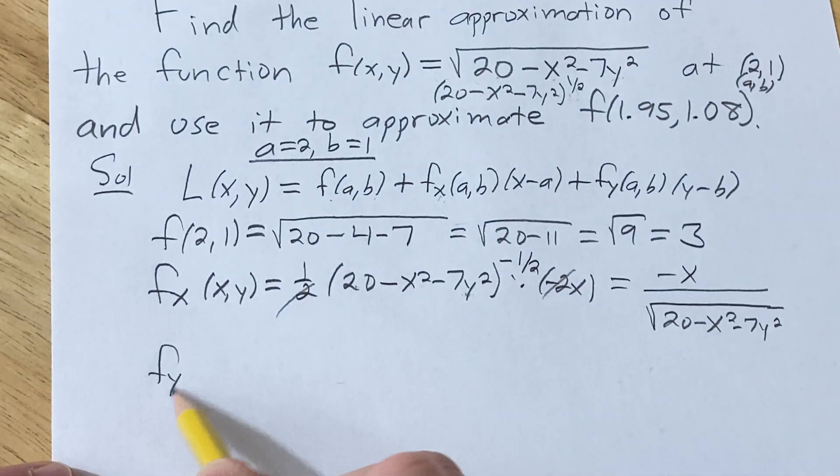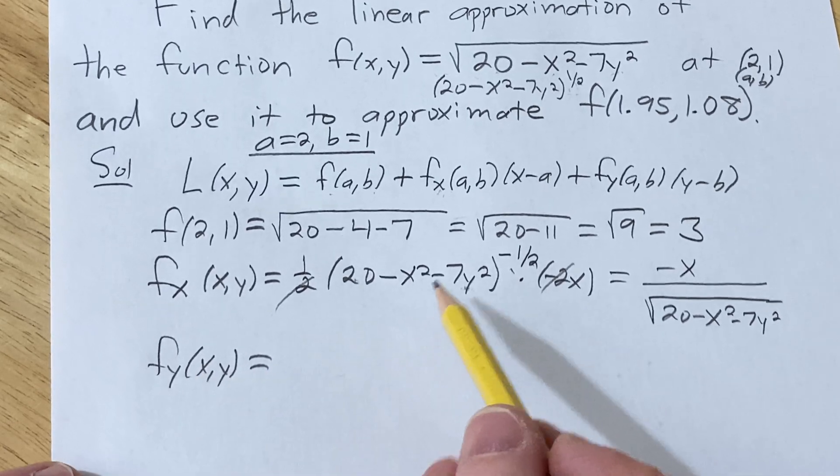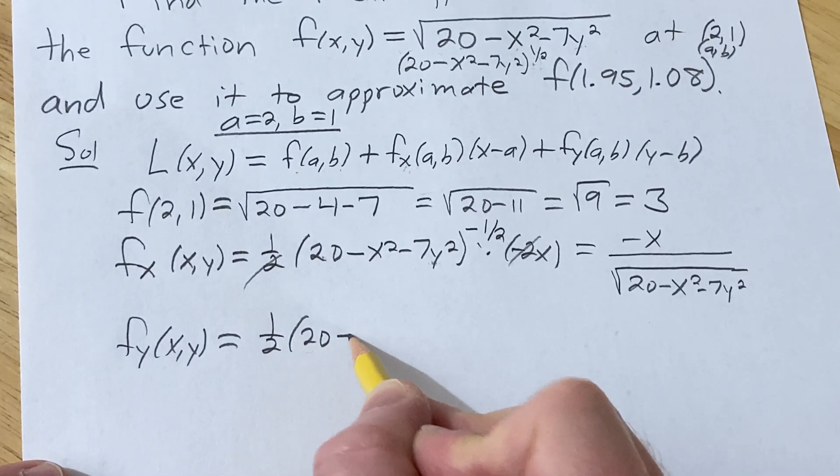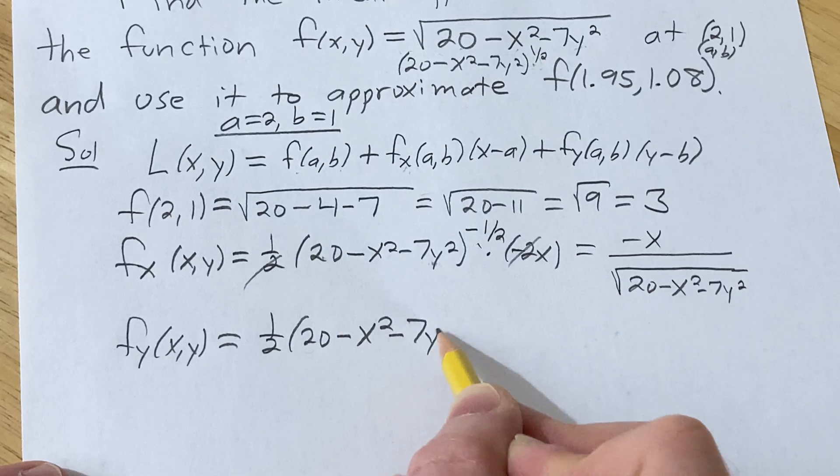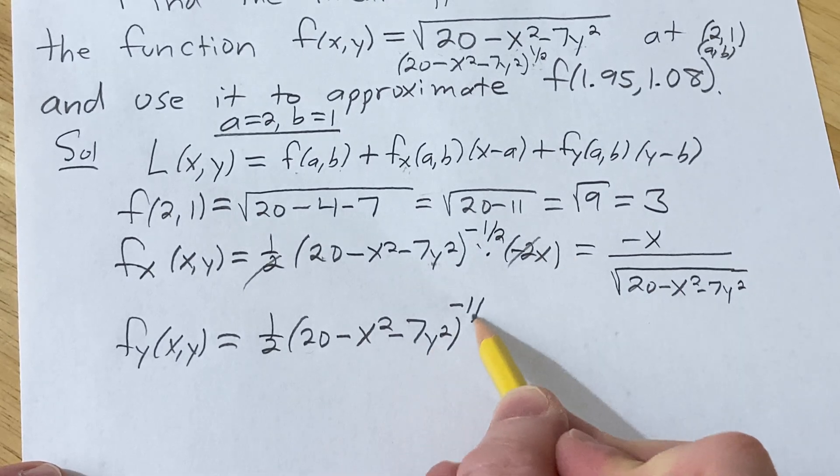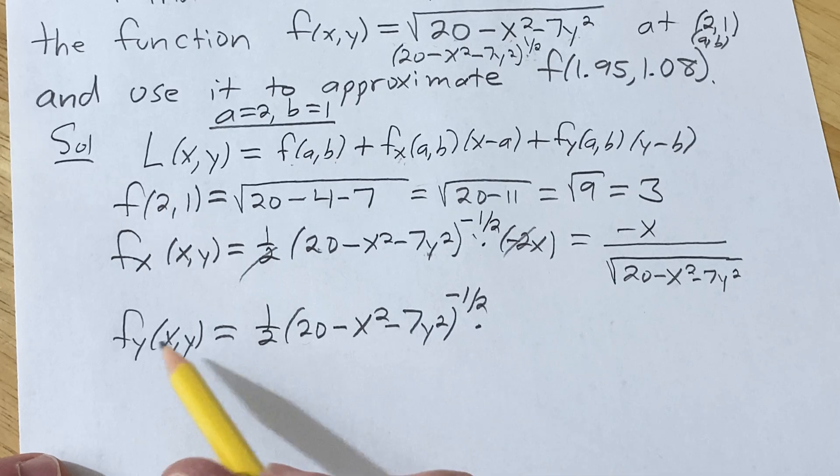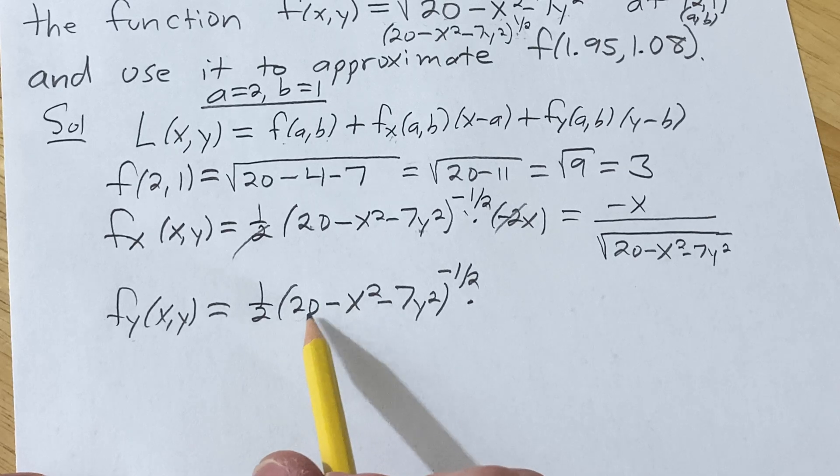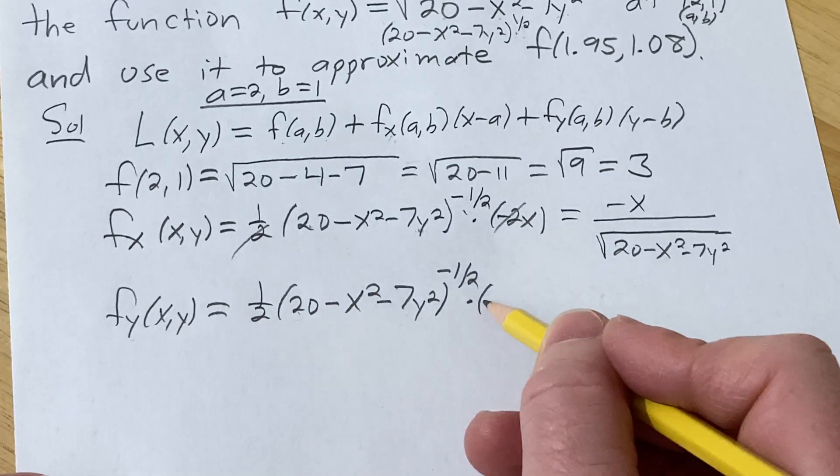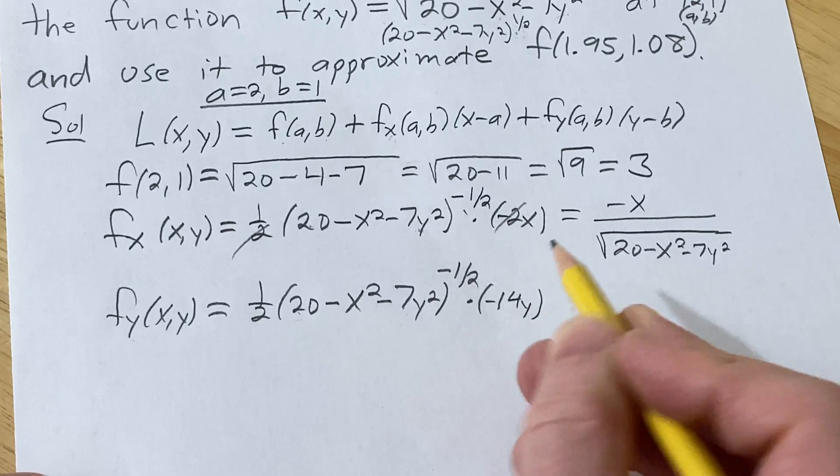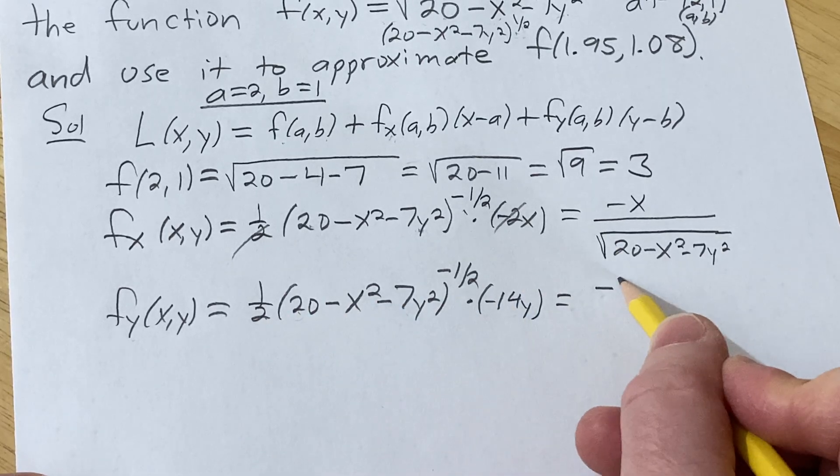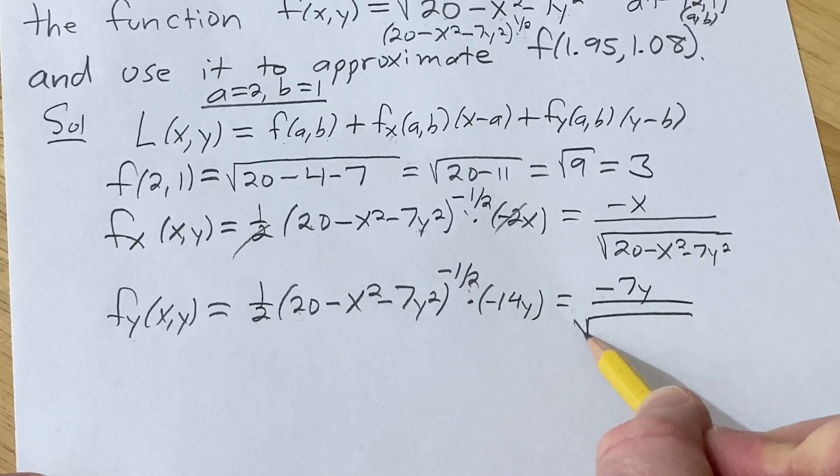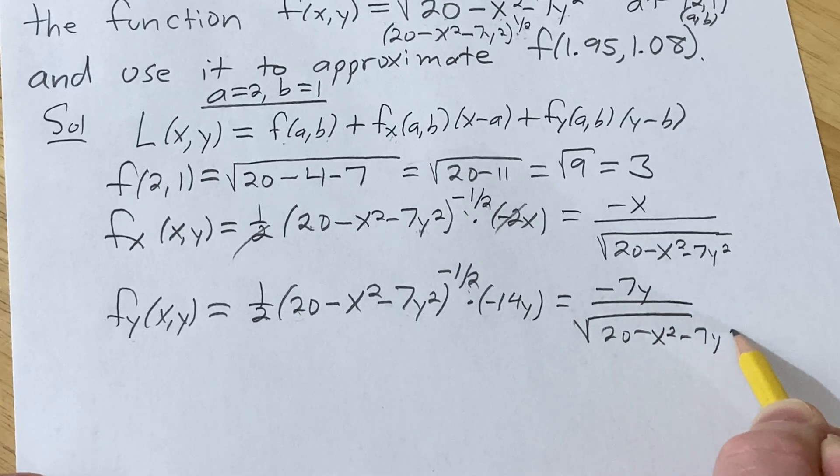Let's do the same thing with y. So taking the derivative, bring down the 1/2, (20 - x² - 7y²)^(-1/2) and then times the derivative of the inside. This time, because it's a partial with respect to y, all of the other variables, in this case x's, are constants. So 0, 0. So we're just going to get -14y. 2 goes into 14 seven times, so we're left with -7y. Bring it downstairs, it becomes a positive 1/2, which turns into a square root. Very nice.